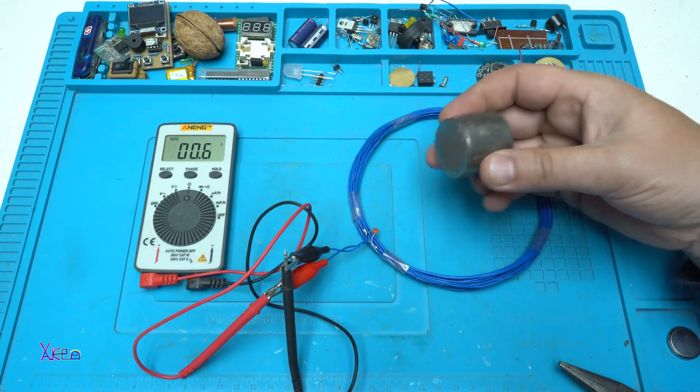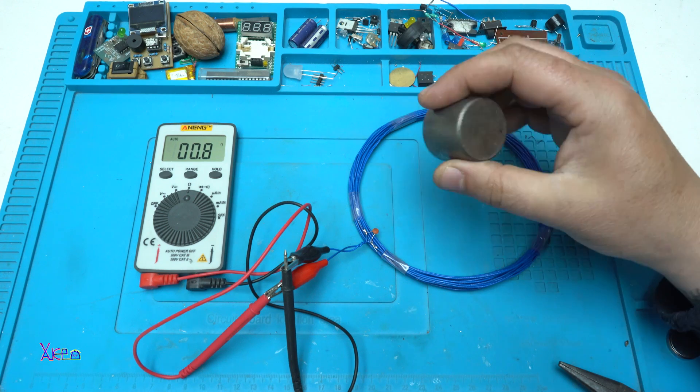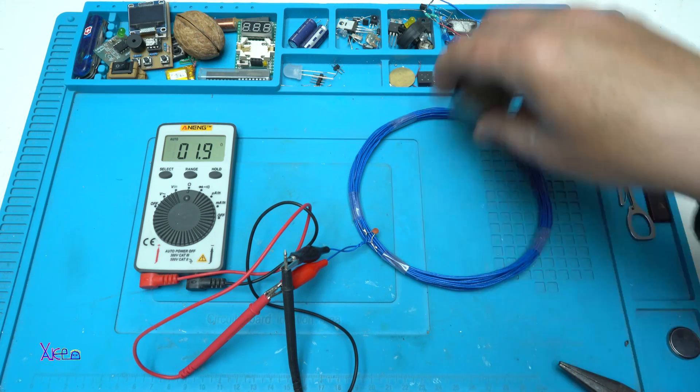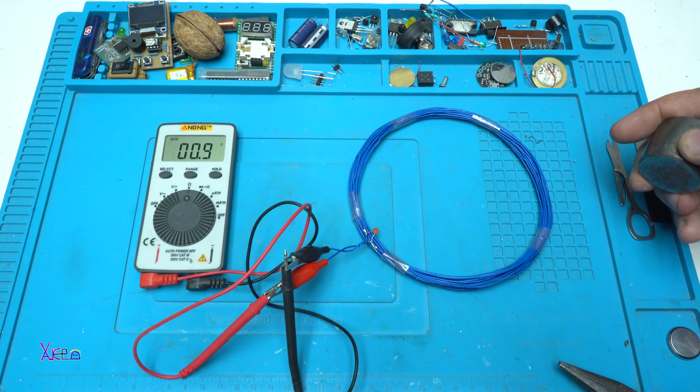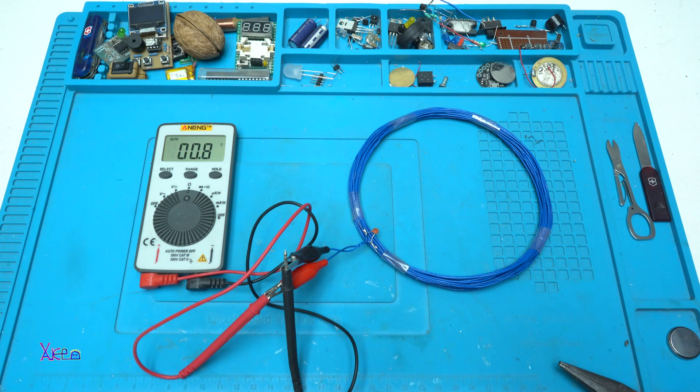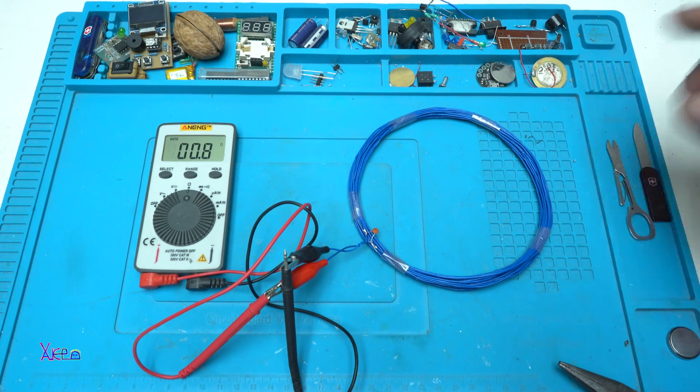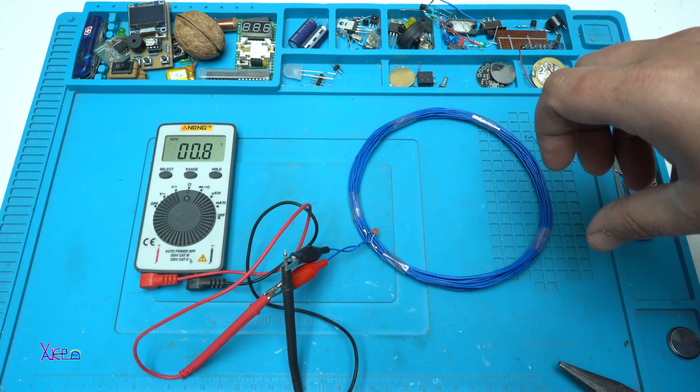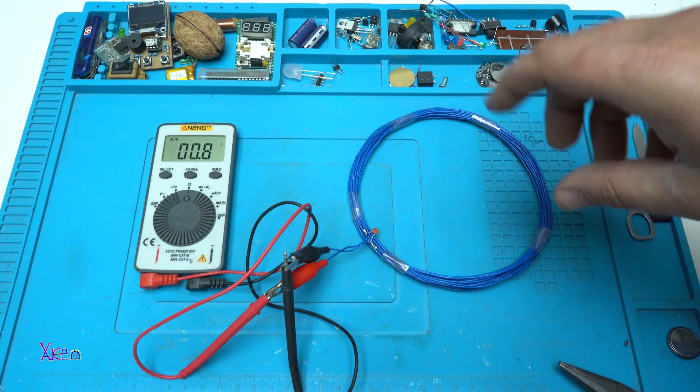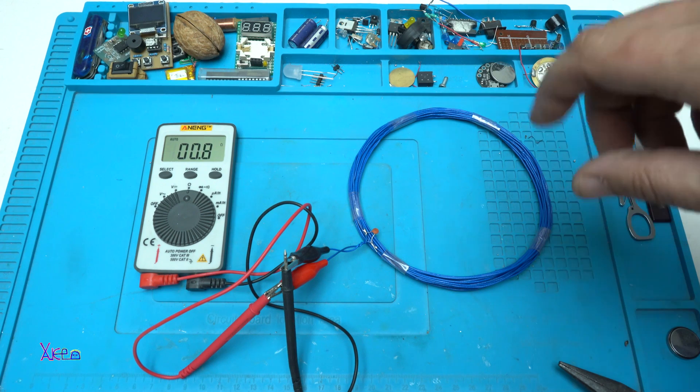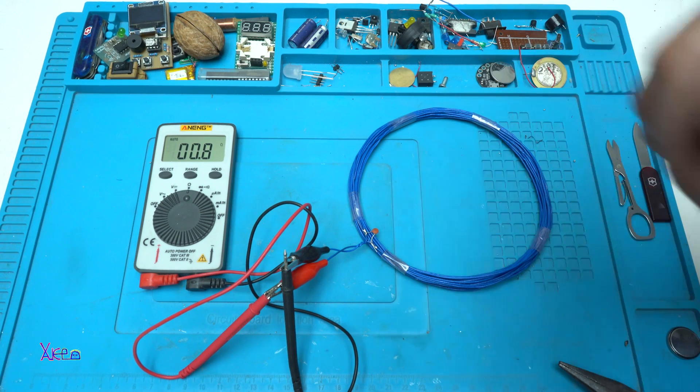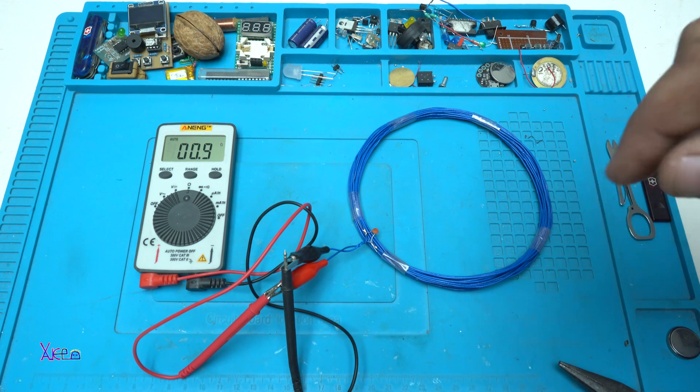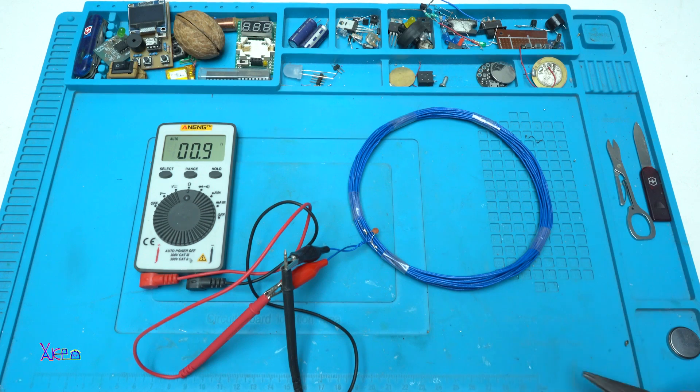Alright here I have a bigger metal piece let's try it. Yes working fine but to remind you this is not a good metal detector, just for experiments. If you want to make a better metal detector please check the description below. I have made a good metal detector using Arduino. Let me try it again.